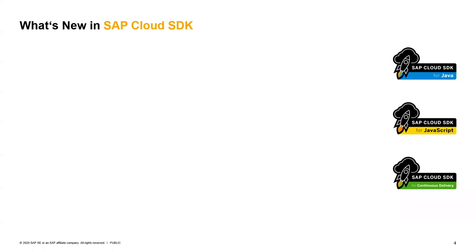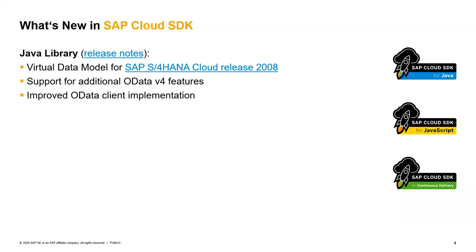Even before diving into the OData client topic, I want to share quickly what is new in the Cloud SDK ecosystem since the last public session. For the SAP Cloud SDK for Java: aligning with the latest release of S/4HANA Cloud 2008, we have released the corresponding virtual data model classes for the OData services. We have introduced additional OData v4 features, and we have released an improved OData client implementation — which is today's topic.